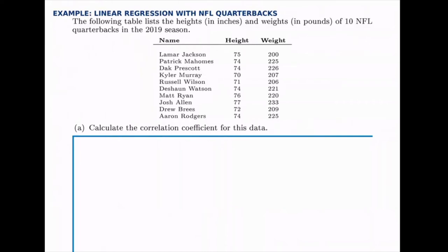Here we'll do a linear regression problem with several steps. We're given some data — a set of quarterbacks in the NFL during the 2019 season — and for each quarterback we're given their height and their weight. We're going to compare these two. Without any other information at the moment, we're going to assume that height represents x and weight represents y, just because they're ordered that way. Later on we might have more information, but for now we'll assume that and change if necessary.